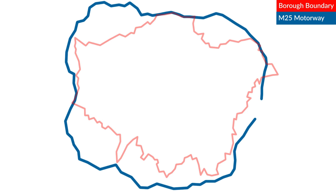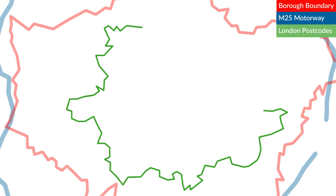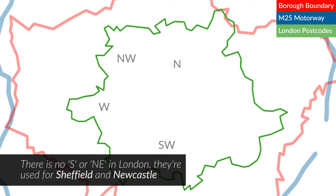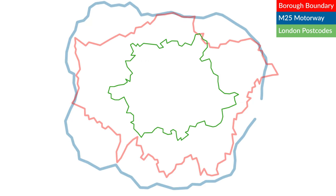Now some people also get all nostalgic and insist that you're only proper London if you have a London postcode — that is to say one that's north, northwest, west, southwest, southeast or east London — but that area is quite a way inside the borough boundary.